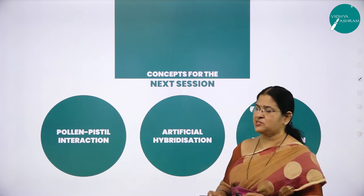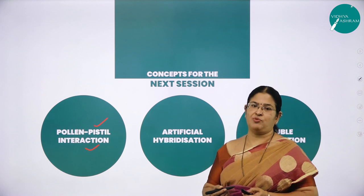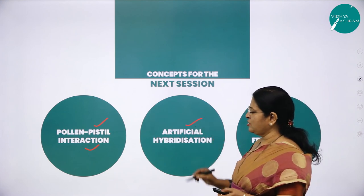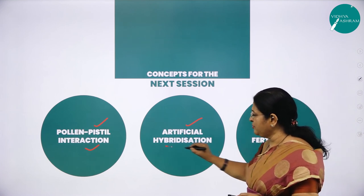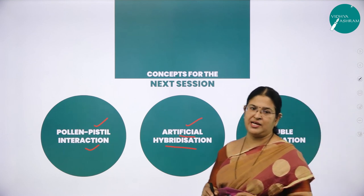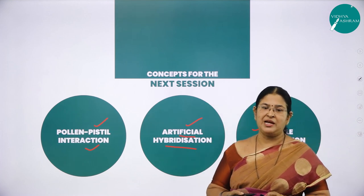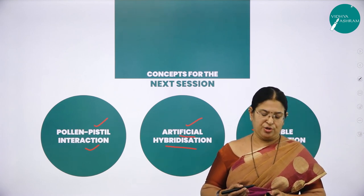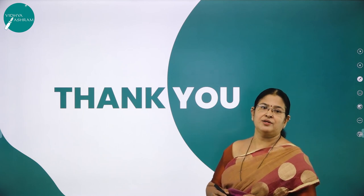In the coming sessions, we will study pollen-pistil interaction — what happens after pollen falls on the stigmatic surface. We will also cover artificial hybridization used in breeding programs, and double fertilization (also called triple fusion) — where one male gamete fuses with the egg cell to form a zygote, and the other fuses with polar nuclei to form the endosperm nucleus. Goodbye and thank you.